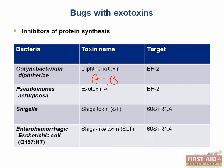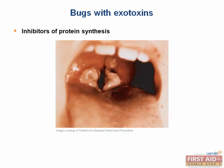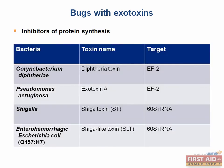The A subunit of Corynebacterium diphtheriae attaches an ADP-ribosyl group to elongation factor II in the human cell, thereby stopping protein synthesis. This leads to the clinical presentation of diphtheria with gray pseudomembranous pharyngitis. Similarly, exotoxin A of Pseudomonas attaches an ADP-ribosyl group to elongation factor II of the host cell, inactivating host protein synthesis and causing cell death.